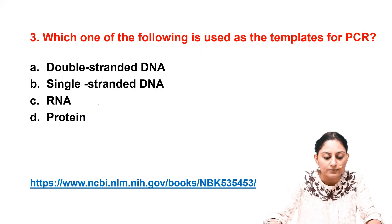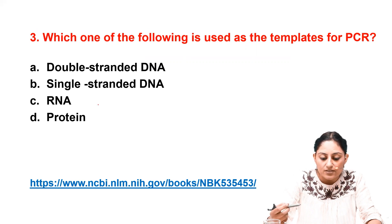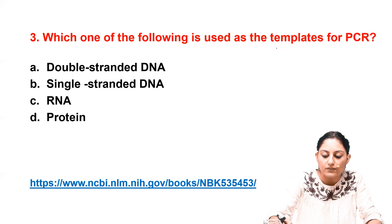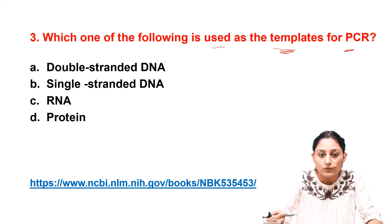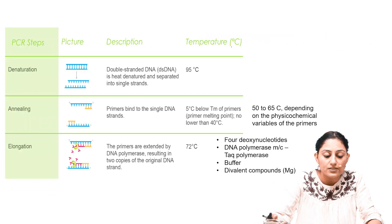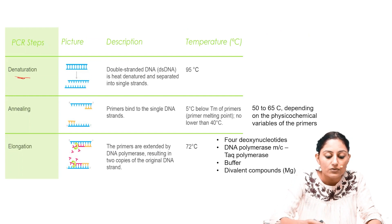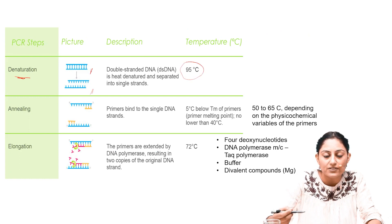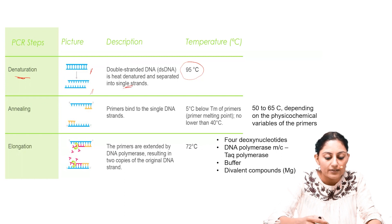Moving on to the third question: which of the following is used as a template for PCR? The options are double-stranded DNA, single-stranded DNA, RNA, and protein. PCR involves multiple steps. The first step is denaturation, where double-stranded DNA is separated by increasing the temperature to 95 degrees centigrade, causing the strands to separate into single strands. A primer is then added and binds to its specific site.